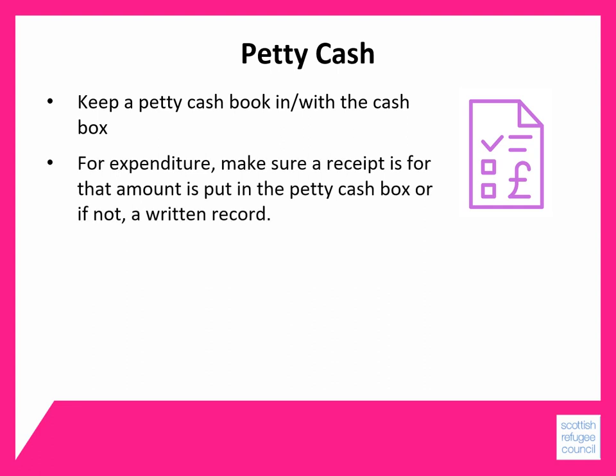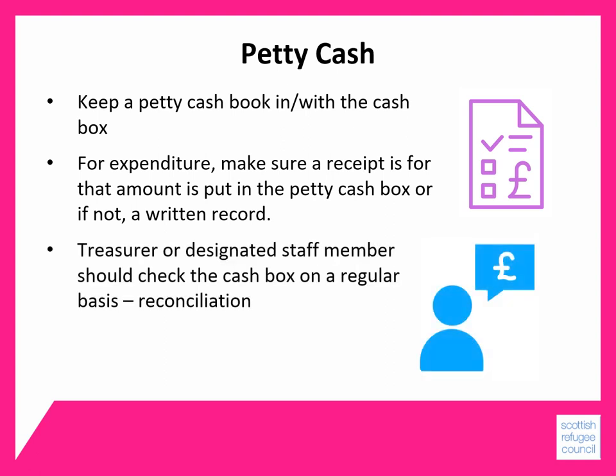Make sure that if any money is spent, a receipt for that amount is put in the petty cash box, or that there's some kind of paper record — for example, a photocopy of a bus ticket, or a signed form from a volunteer. Your treasurer or designated staff member should check the cash box on a regular basis, for example every fortnight or every month, and check that the amount in the tin matches with the petty cash book. This is called reconciliation.